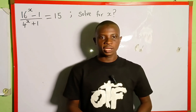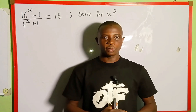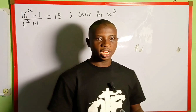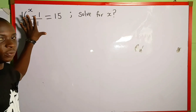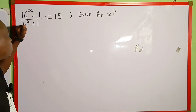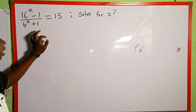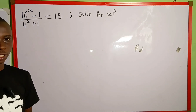Hello everyone, you are welcome back again. We are going to solve for the value of x from this exponential equation. The given equation is 16 raised to the power of x minus 1, divided by 4 raised to the power of x plus 1, is equal to 15.